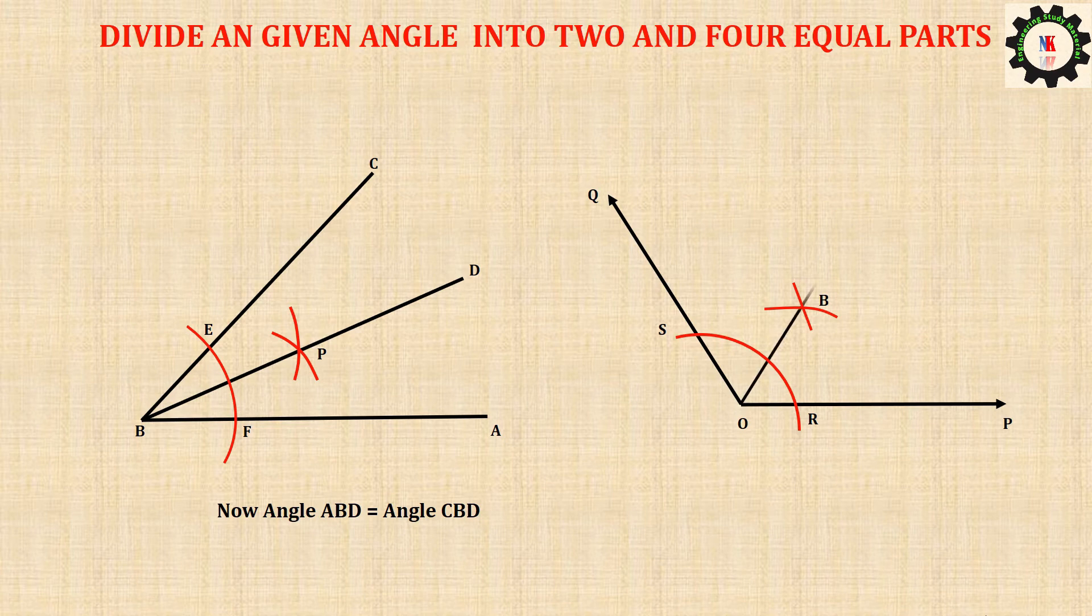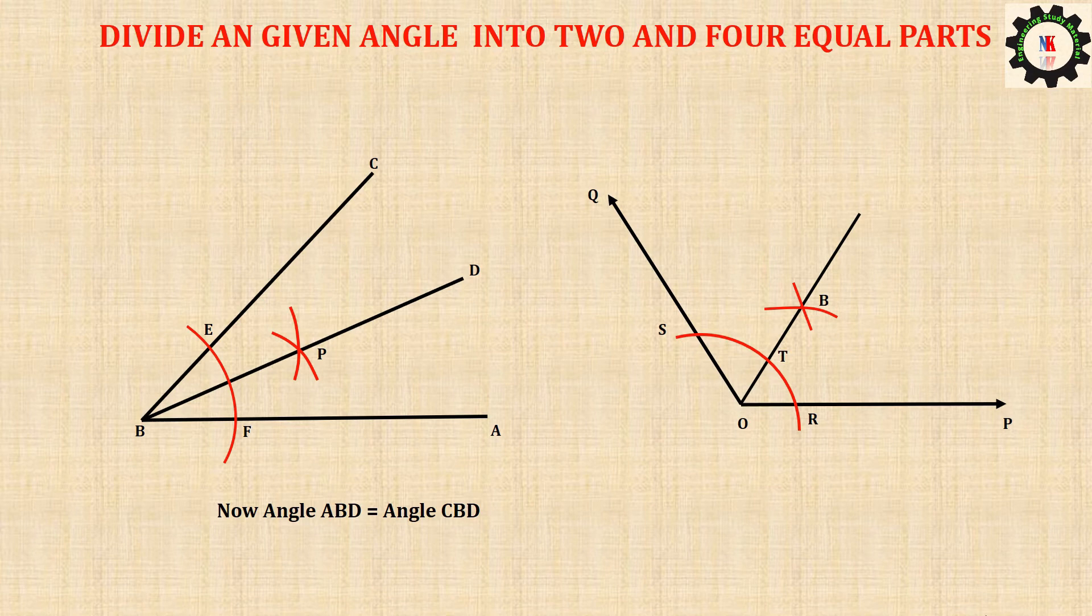Join OB and produce it. Now the angle POQ is divided into two equal parts. Let arc SR intersect OB at T.